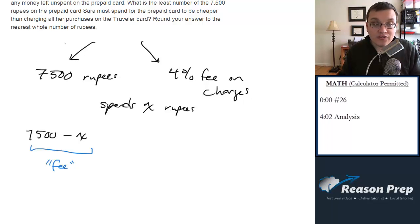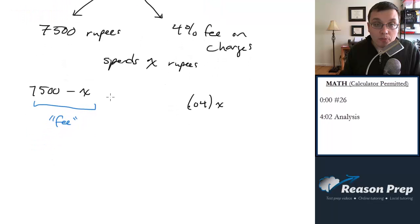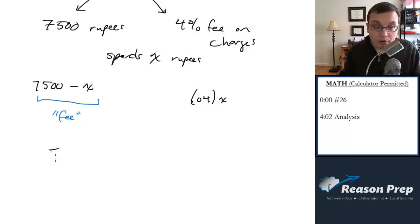What would be the fee on this end? Well, the fee on this end would be X times 4%, so 0.04 times X. Why not 1.04 times X? Because we're not increasing X by value. We don't want to know the total cost. We just want to know what is the fee. We want to know what is 4% of those rupees that she spent. That is the fee. We want to know when will this prepaid card be cheaper than charging all her purchases on the traveler card. So in other words, we want to know when this value will be less than this value.